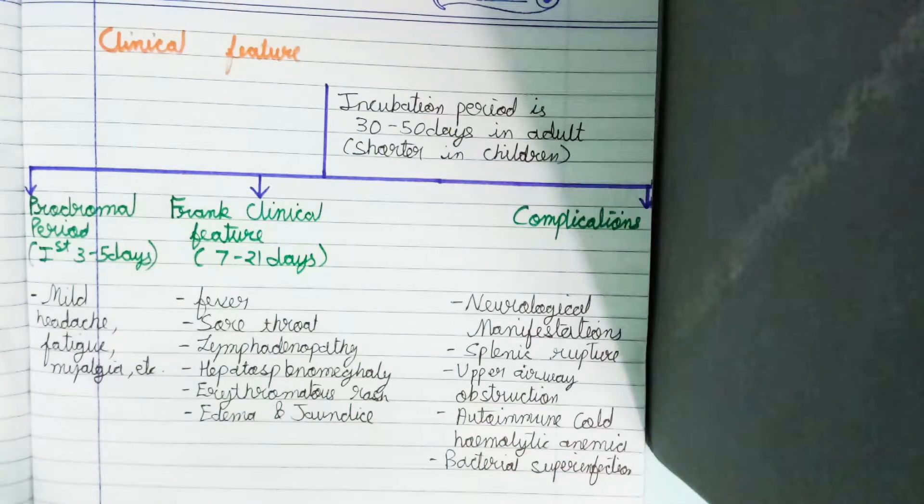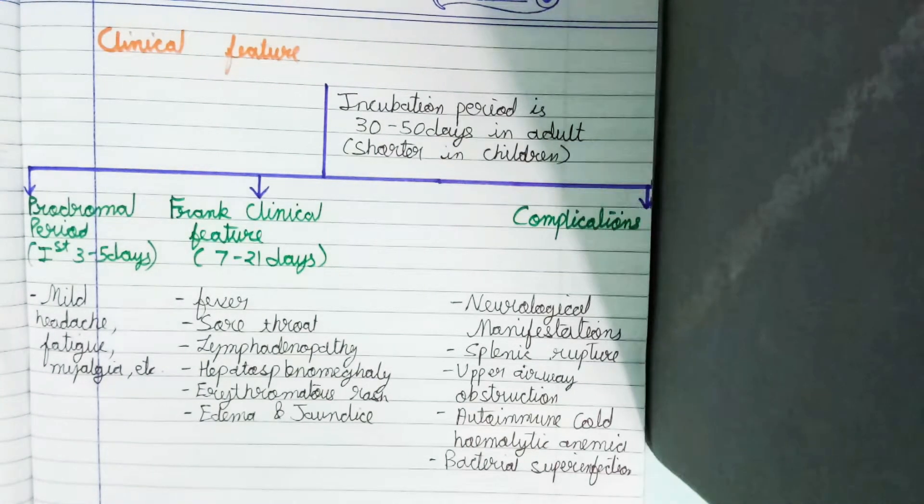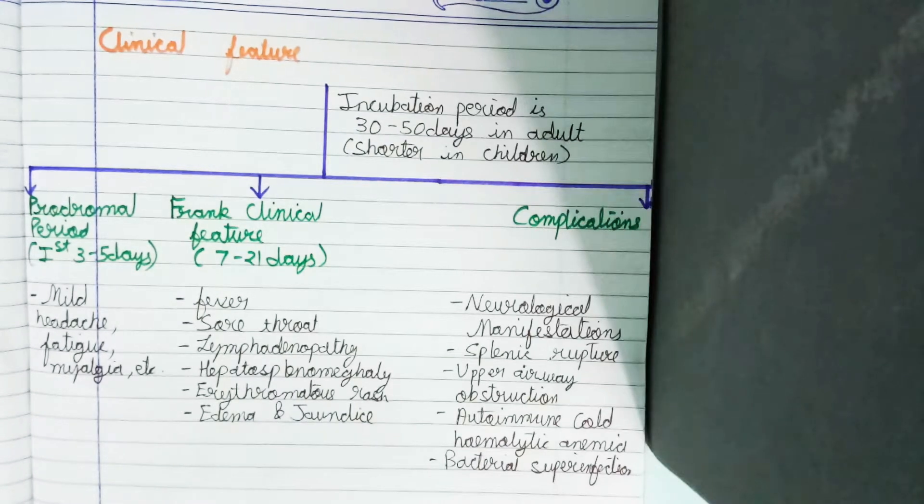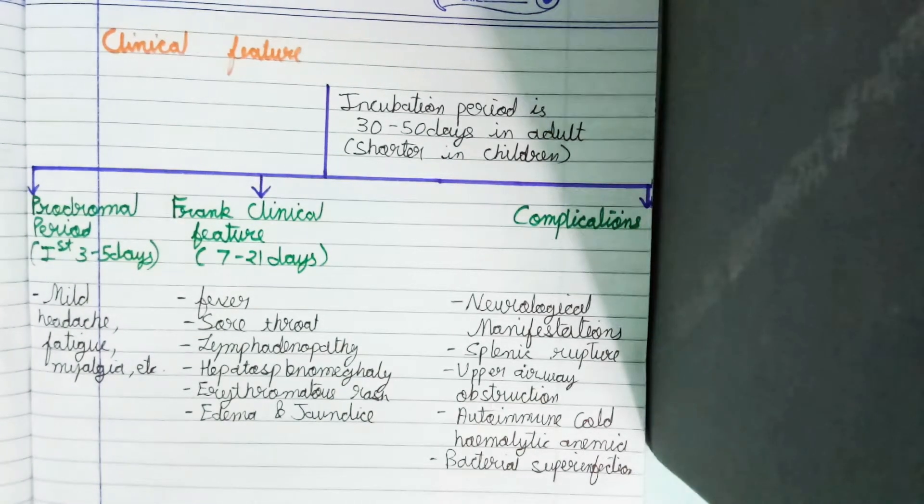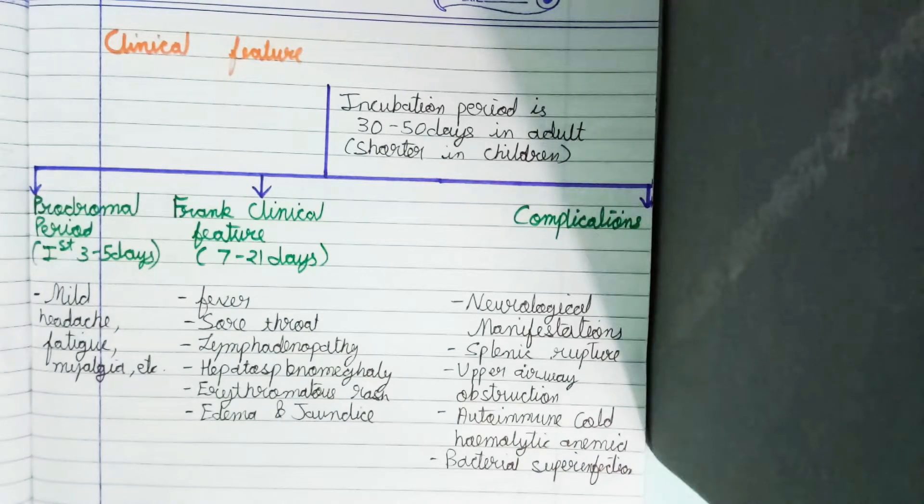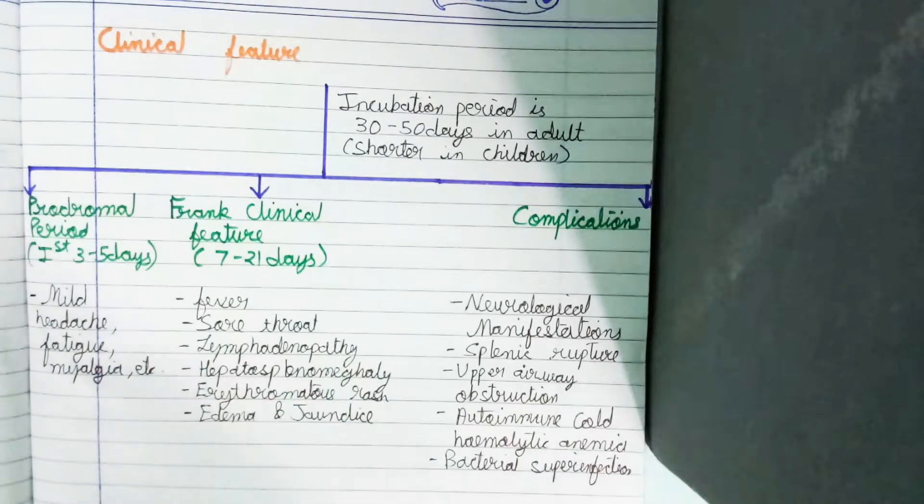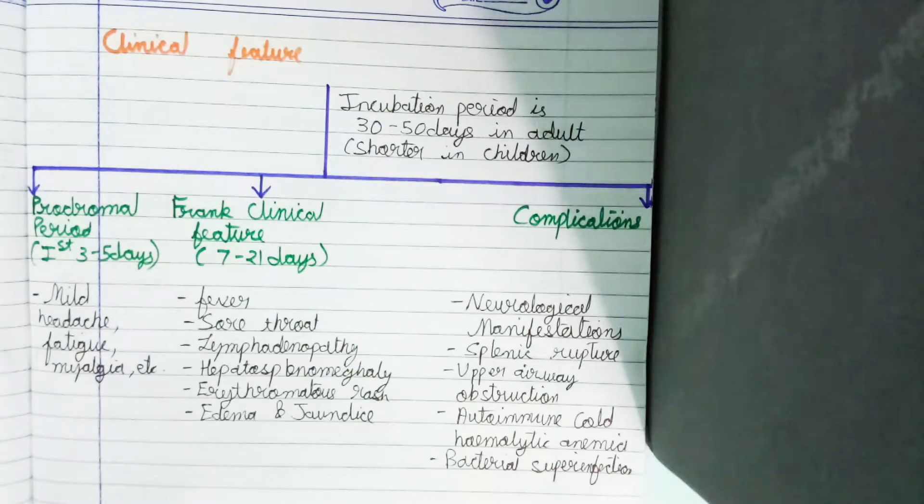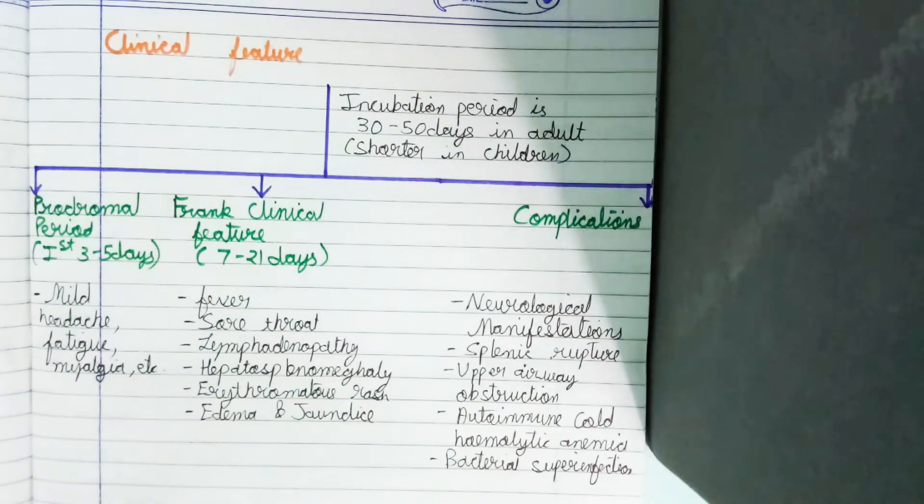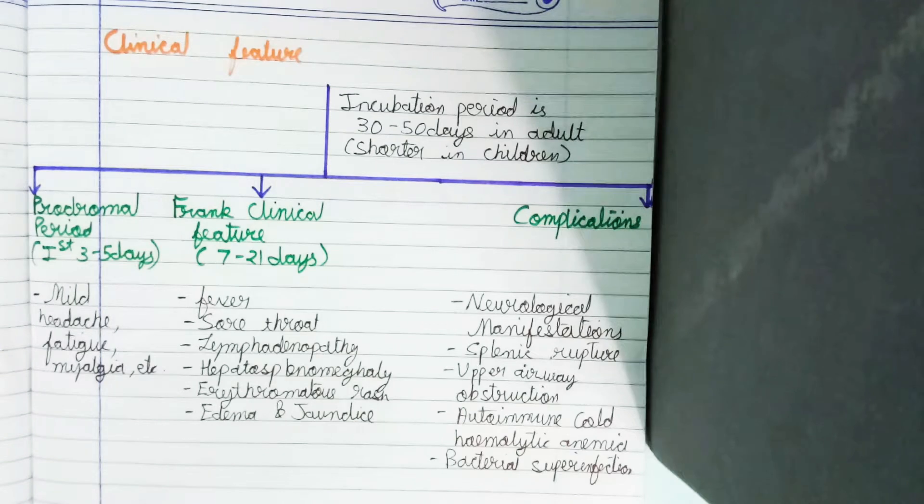The prodromal period is three to five days. Then frank clinical features occur around 7 to 21 days, and after that complications may occur. In the prodromal period, symptoms are mild—headache, fatigue, and myalgia. In the frank clinical features, main symptoms include lymphadenopathy, sore throat, fever, hepatosplenomegaly, erythematous rash, edema, and sometimes jaundice.